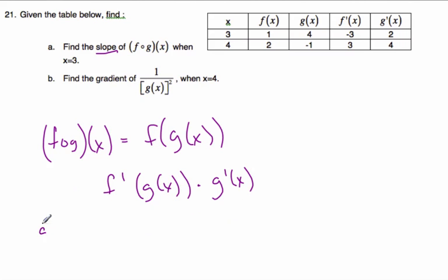And so for part a, I want to find the slope when x is 3. I'm going to find f prime g at 3 times g prime at 3. Using my table, well, g at 3, here's 3, g at 3 is 4. So it's f prime at 4 times g prime at 3, g prime at 3 is 2.